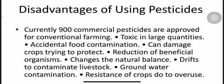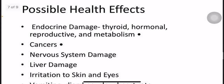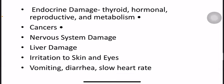The disadvantages of using pesticides: currently 900 chemical pesticides are approved for conventional farming. They are toxic in larger quantities, can cause accelerated food contamination, can damage the very crops they are trying to protect, reduce beneficial organisms, change the natural balance, drift to contaminate livestock, and cause groundwater contamination and crop resistance due to overuse.